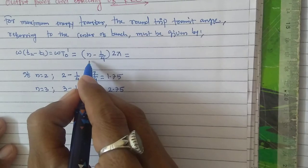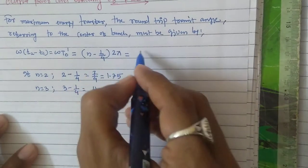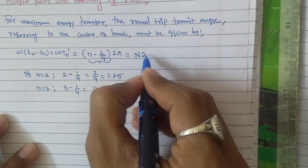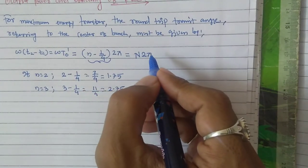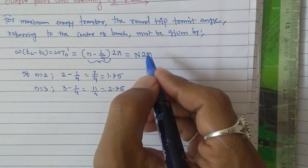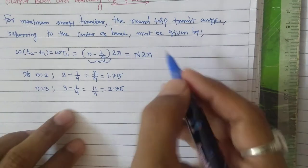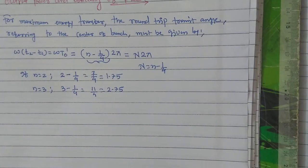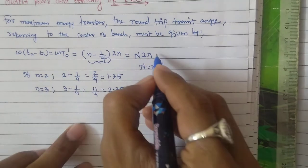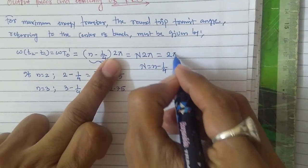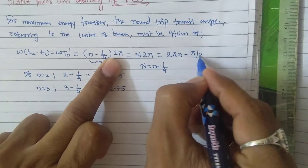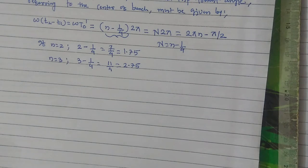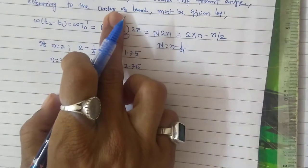Here n is any positive integer and is called the mode number N. So the round trip transit angle omega t0 dash equals N minus 1/4 multiplied by 2 pi, which can be written as 2 pi N minus pi/2. With this brief introduction about the condition to get maximum energy transfer and the mode number relation, we proceed to derive output power.